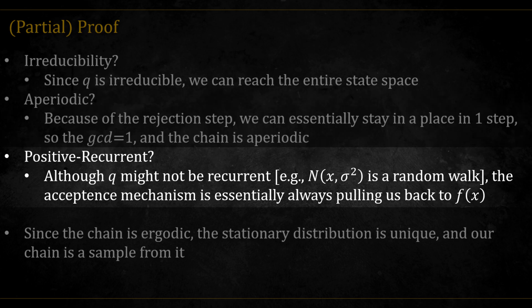The chain is positive recurrent because, although q might not be positive recurrent, the acceptance mechanism makes sure that we are drawn to the distribution of f of x. So as long as f of x is a proper distribution, we are always pulled back to it, and the probability mass doesn't wander off to infinity.